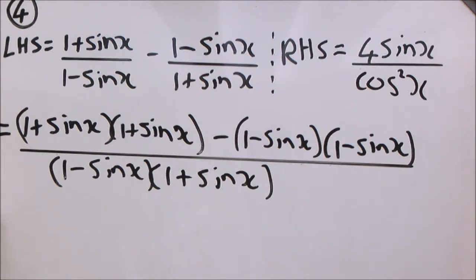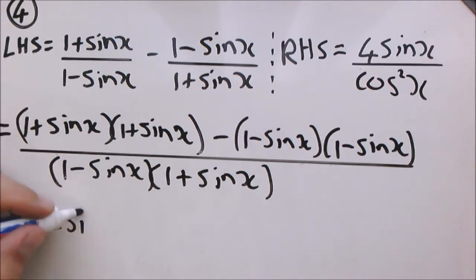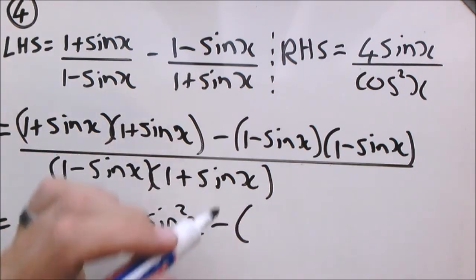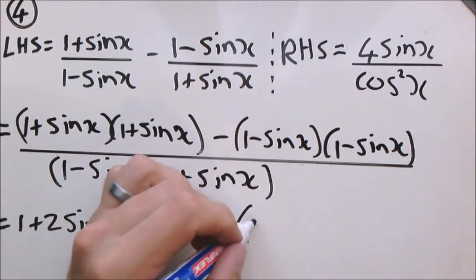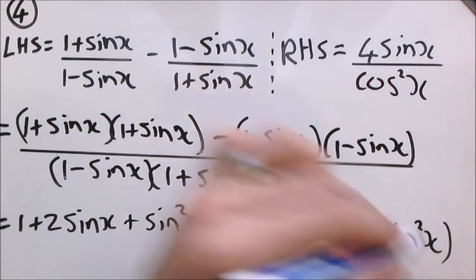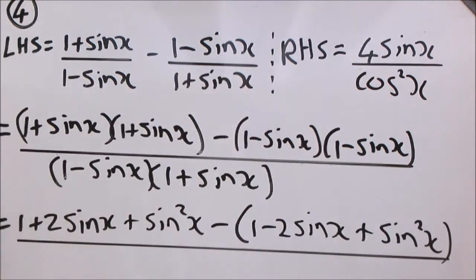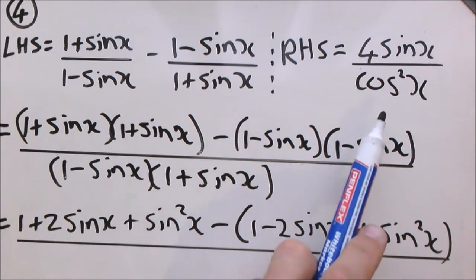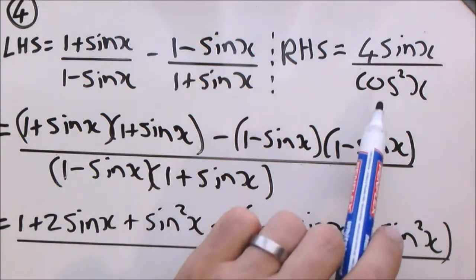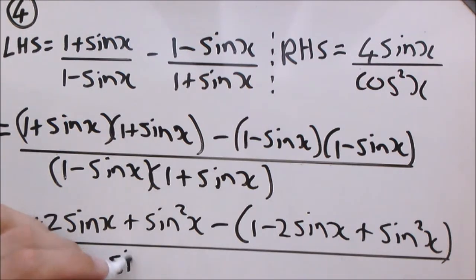Let's simplify the numerator. If you multiply these two brackets with each other, it will become 1 plus 2 sin x plus sin squared x, minus bracket. In this case, it will be beneficial to multiply the two brackets of the denominator. Normally I leave that all the way to the end, but seeing where we are going and understanding that this is the difference between two squares, we can multiply. I know we are going to end up with 1 minus sin squared x, which is an identity equal to cos squared x. So this will become 1 minus sin squared x.